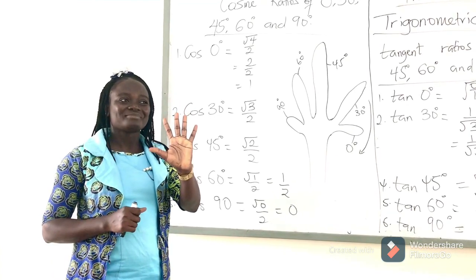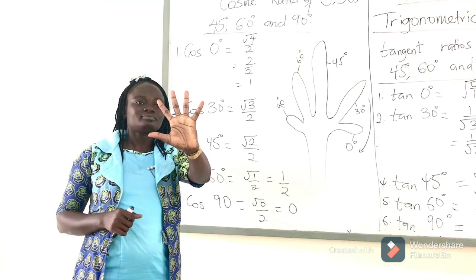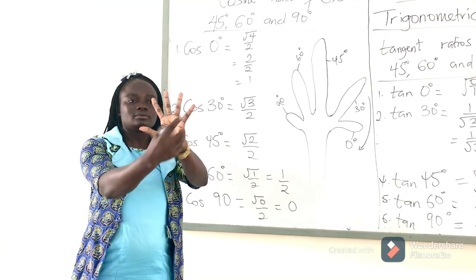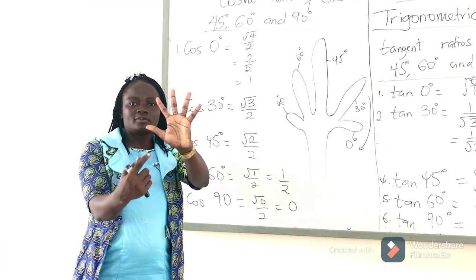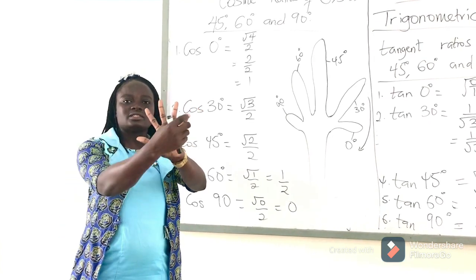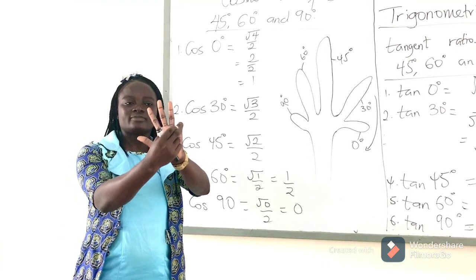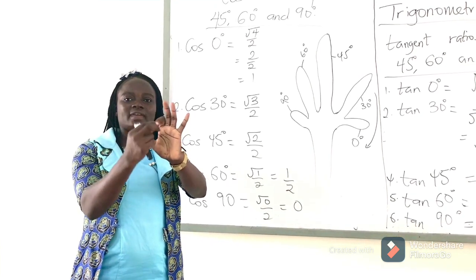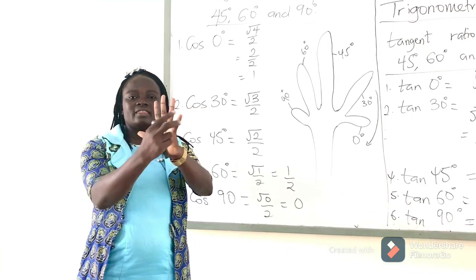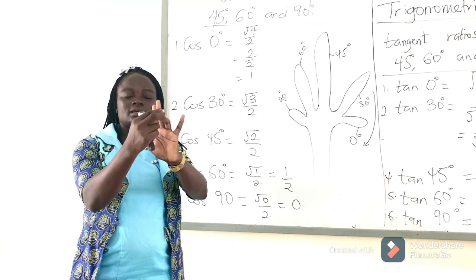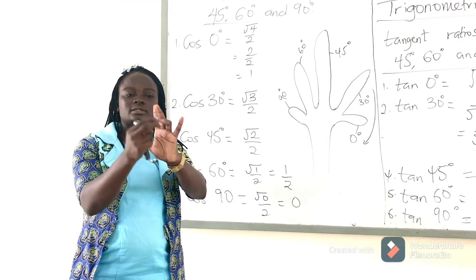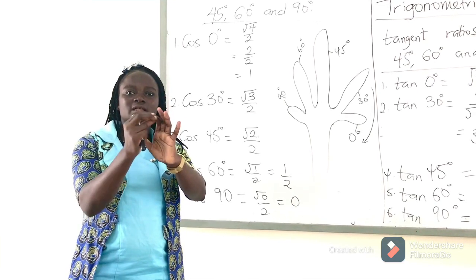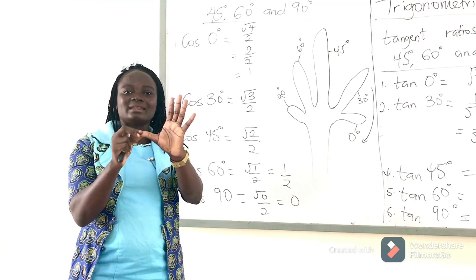So we know we have 5 fingers in all: 1, 2, 3, 4, 5. This is the little finger, or the pinky. This is the ring finger. This is the middle finger. Our index finger. And our thumb. The little finger represents 0 degrees, the ring finger represents 30 degrees, the middle finger represents 45 degrees, the index finger represents 60 degrees, and the thumb represents 90 degrees.